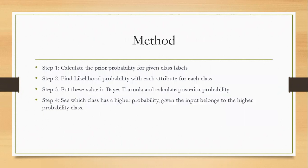Summarizing the method of Naive Bayes, we can put it into four steps. First, calculate the prior probability for the given class. Then we find the likelihood probability for each attribute of each class. Then we put this value in the Bayes formula and calculate the posterior probability. And lastly, we see which has a higher probability, and then we take that value.